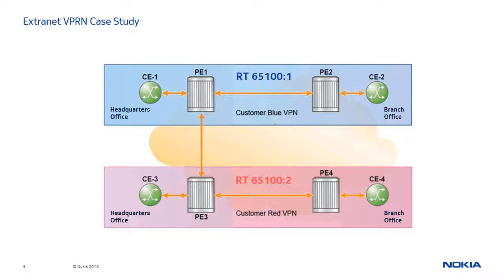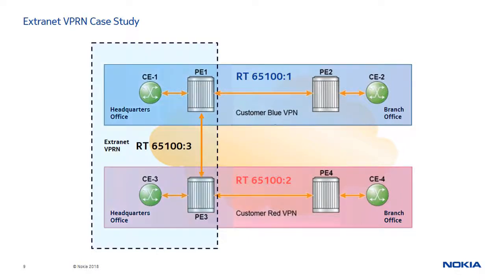We will now move to our lab environment to complete this Extranet case study. Similar to the example in the presentation, the Blue VPN is configured on PE1 and PE2, while the Red VPN is configured on PE3 and PE4. We will configure Extranet VPRN so that the head offices CE1 and CE3 share routes, while keeping the branch offices CE2 and CE4 separate from each other. Once completed, we will verify the configuration by viewing the blue and red VRFs.